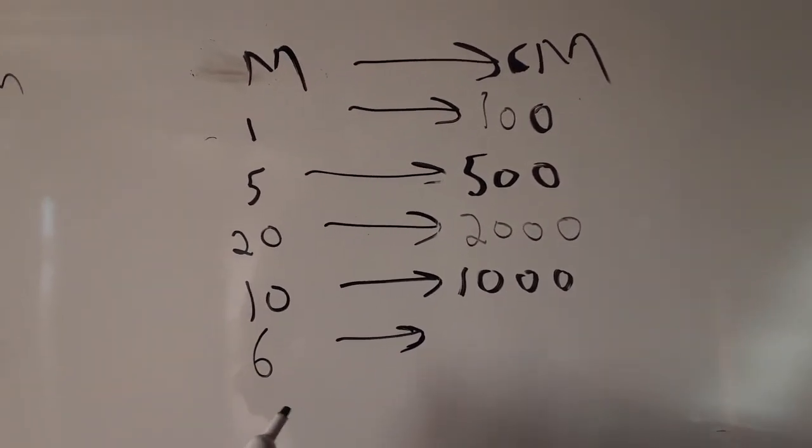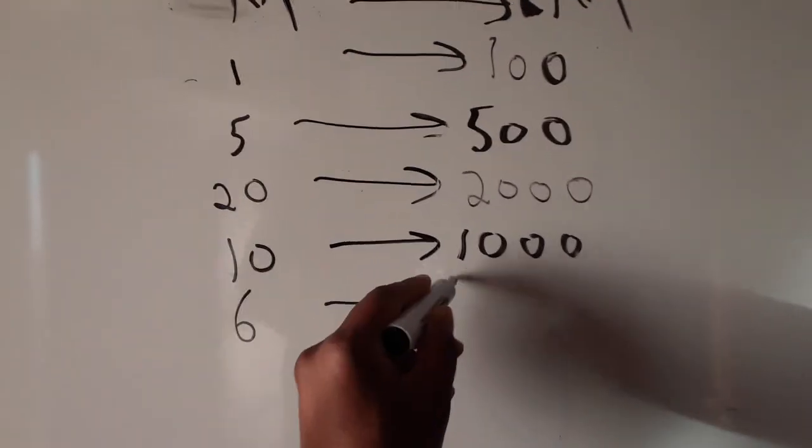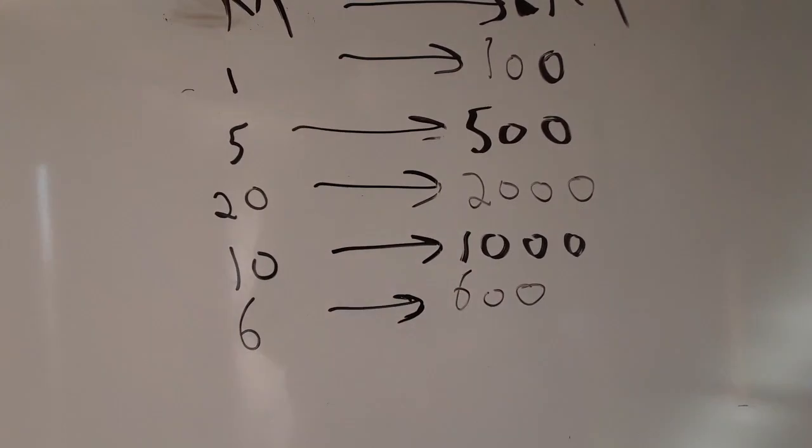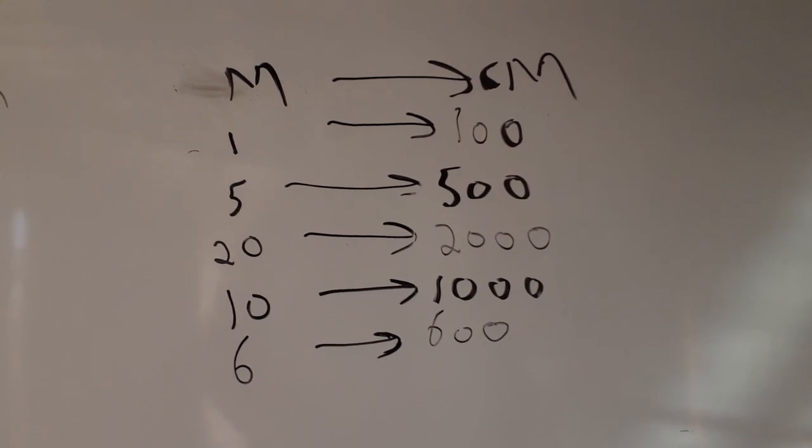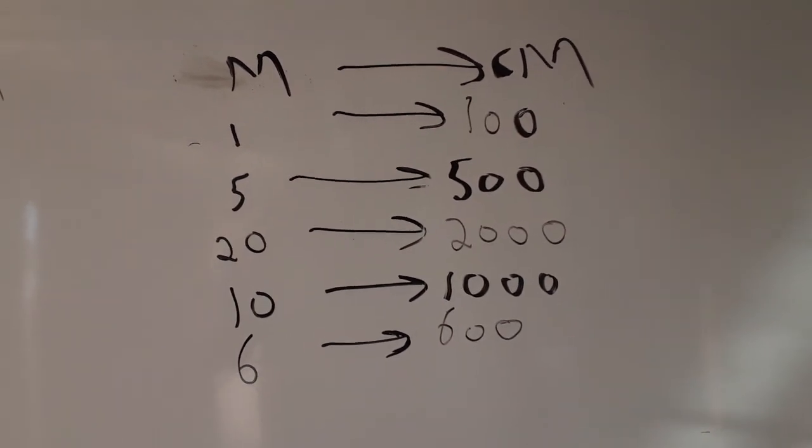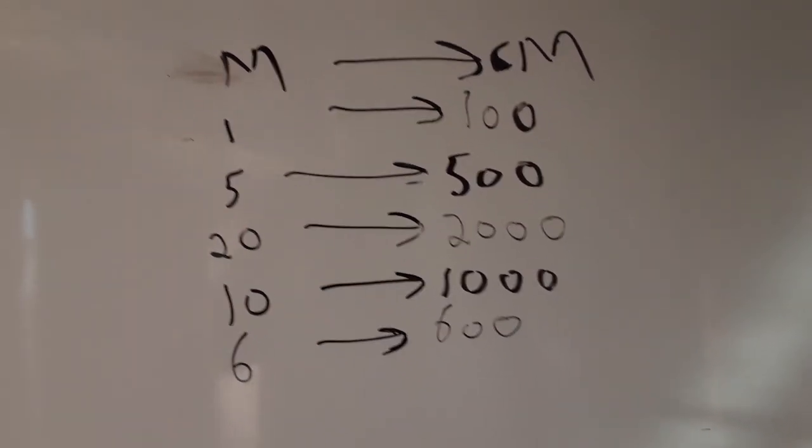Then we have 6. So 6 times 100, we have 600. 600 centimeters gives us 6 meters.